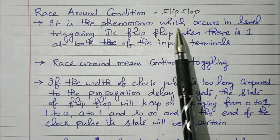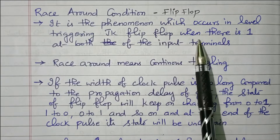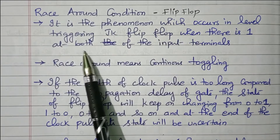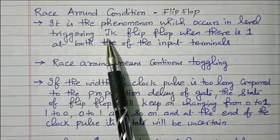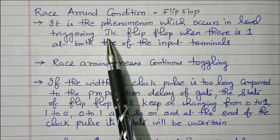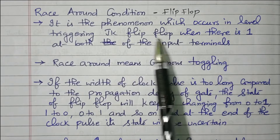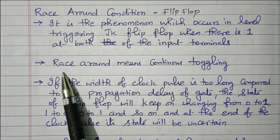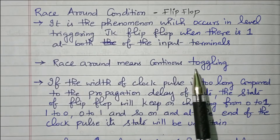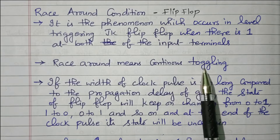Race around condition is the phenomenon which occurs in level-triggering JK flip-flop when there is a 1 at both the input terminals. In the JK flip-flop, when J value as well as K value is 1 — both are 1 — the race around condition exists. Race around means continuous toggling. The output will toggle from 0 to 1, 1 to 0, continuously.